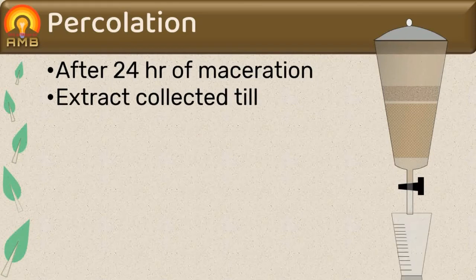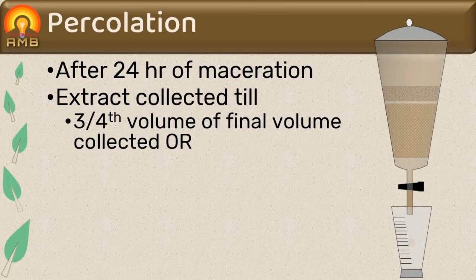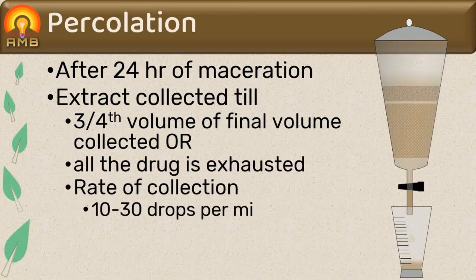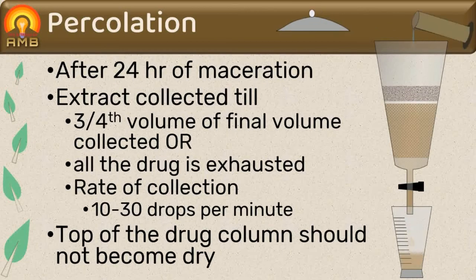Three-fourths of the volume required for the final product is collected, or collection continues until all the drug is exhausted. The rate of collection of percolate is generally 10 to 30 drops per minute. A precaution is that the top of the drug column should not become dry; to avoid drying, fresh menstruum is added. Finally, the percolate is filtered to remove debris and clarify the preparation.